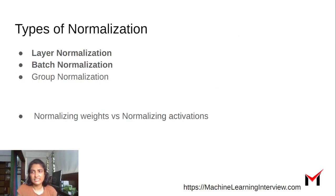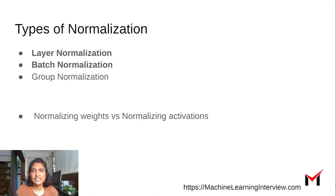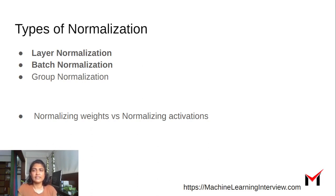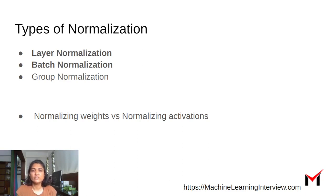There are many types of normalization. Typically, layer normalization and batch normalization are the most popular types. Layer normalization is typically done per instance for all the activations of a layer. Batch normalization is done at the level of a mini-batch. Group normalization is another technique where instead of doing it across the entire batch, you pick a group and do the normalization across the activations within that group. There is also the aspect of normalizing the weights versus normalizing activations — in certain architectures the weights are normalized instead of the activations.